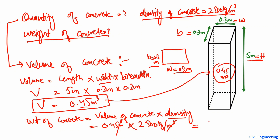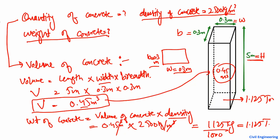We get the weight of the concrete as 1125 kilograms. Simply dividing by 1000, we get 1.125 tons. So 1.125 tons of concrete is present in this column with dimensions of 5 meters by 0.3 meter by 0.3 meter.